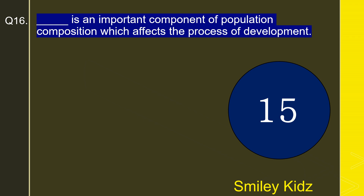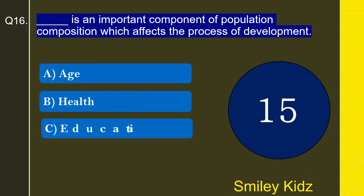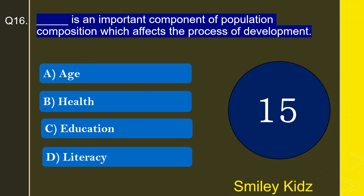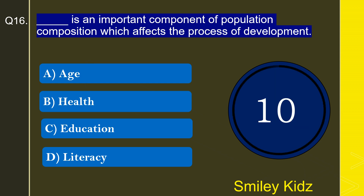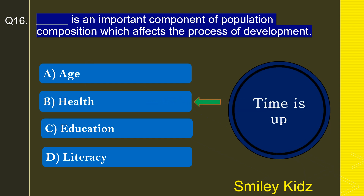Moving to question number 16: What is an important component of population composition which affects the process of development? Options are age, health, education, or literacy. The correct answer is health. Health is an important component of population composition which affects the process of development.